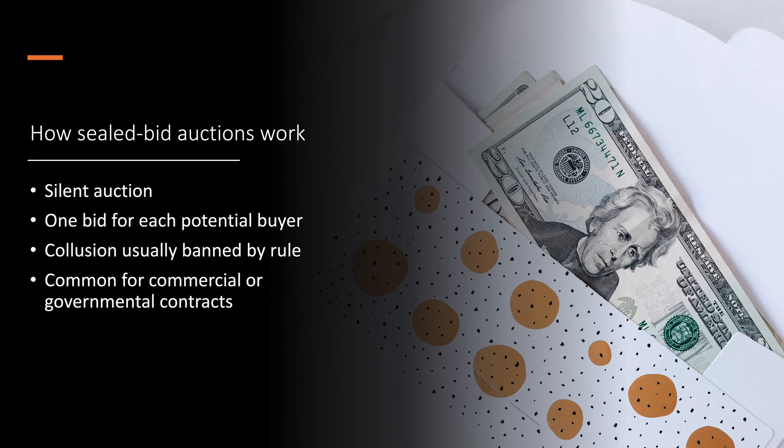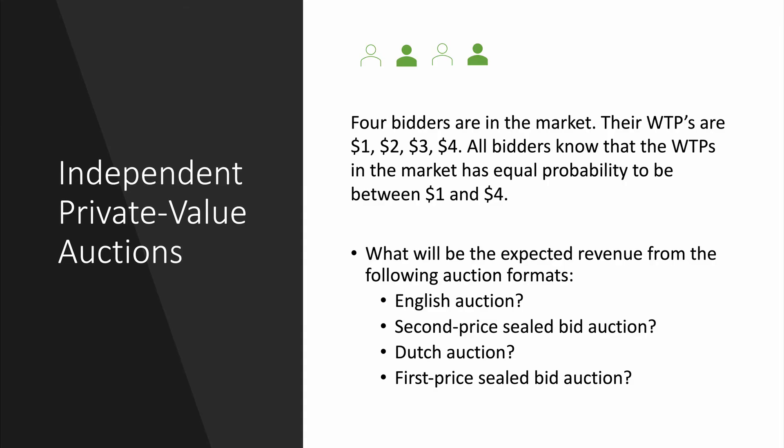Now let me use an example to discuss how these four different auction formats may actually be somewhat similar to each other. We are looking at independent private value auctions — I'll explain private value a little bit later. There are four bidders in the market, and their willingness to pays are $1, $2, $3, and $4. All the bidders know their own willingness to pay, and they also know that the willingness to pay in the market has an equal probability to be between $1 and $4. They don't know the specific numbers, but they do know the range.